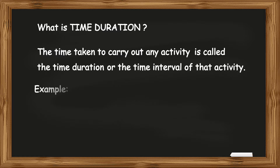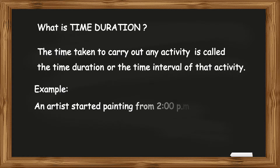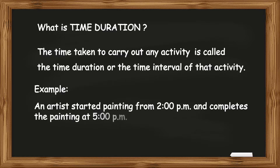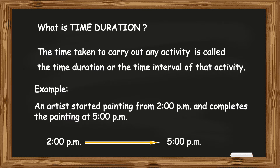For example, an artist started painting from 2 p.m. and completes the painting at 5 p.m. The time period from 2 p.m. to 5 p.m. is the duration taken to complete the painting.